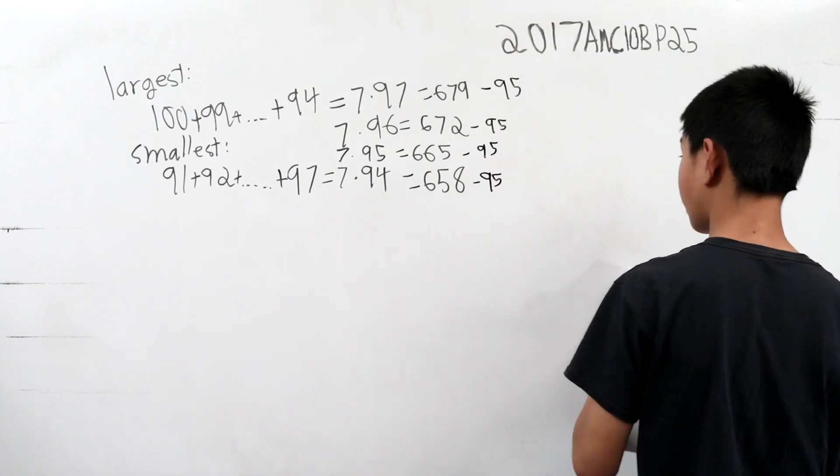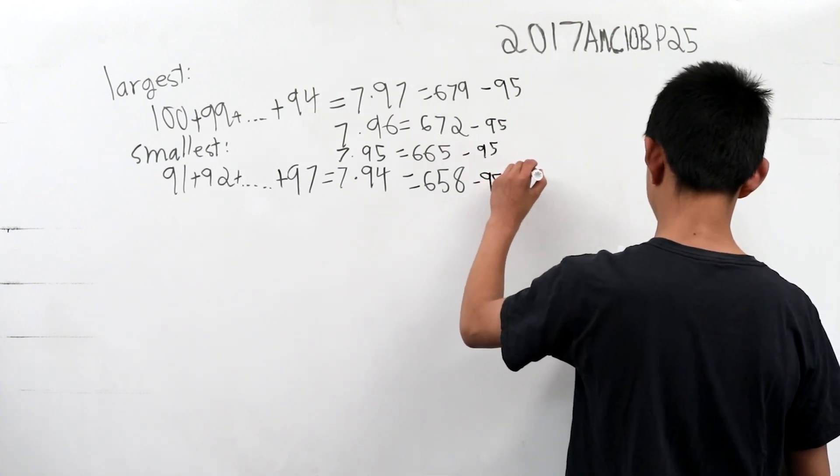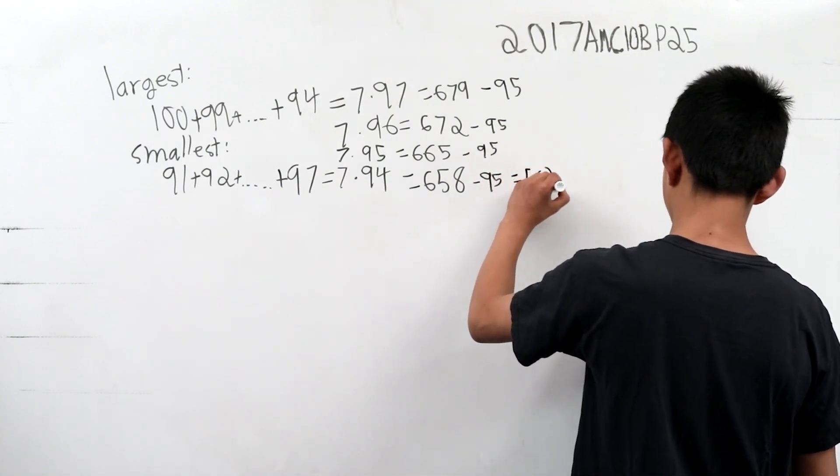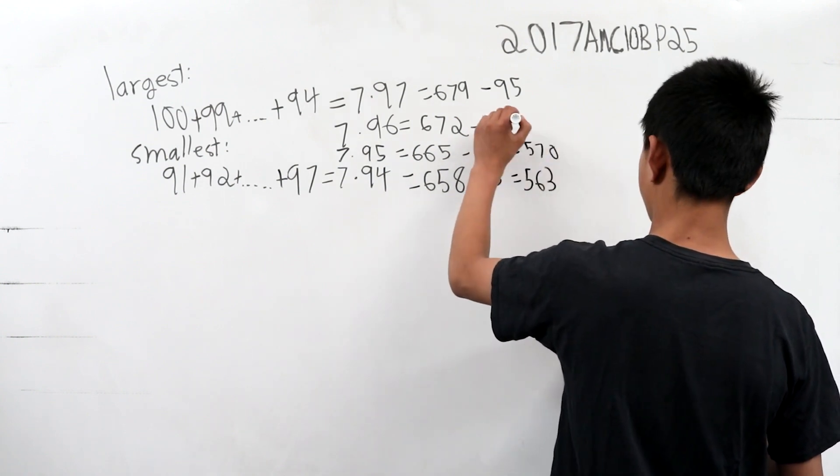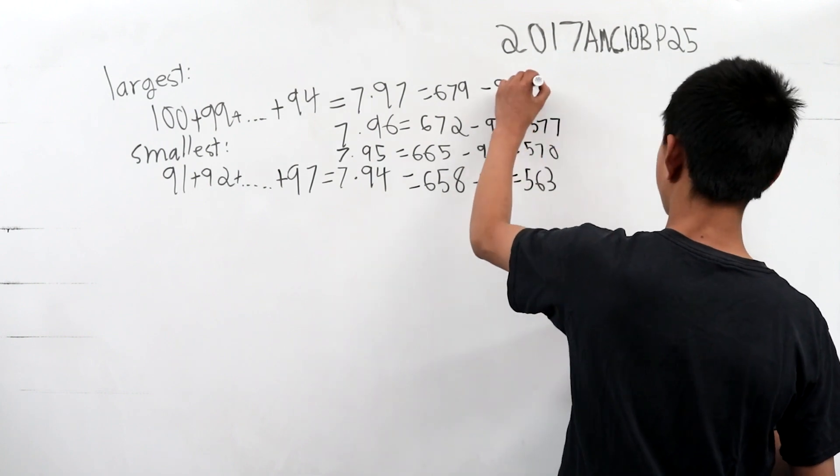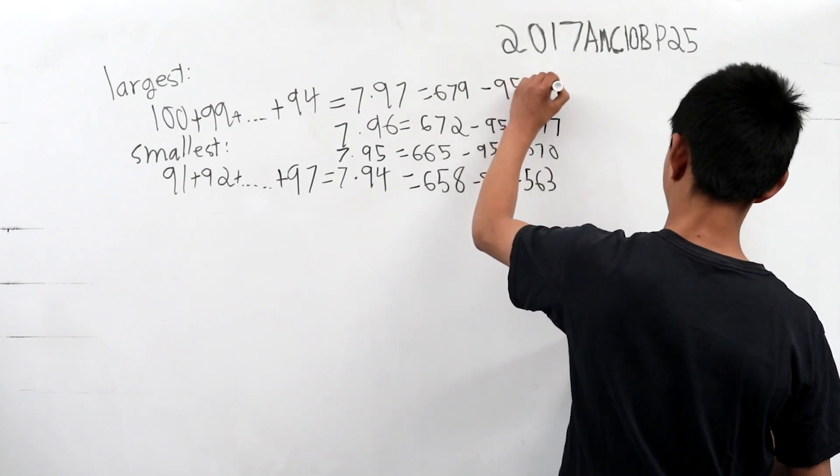We can then find these new values. This first one is 563. The second one is 570. This one is 577. And this one is 584.